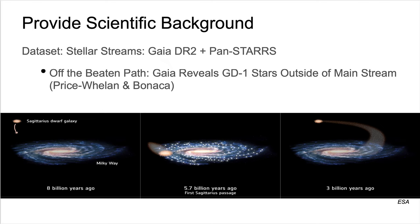In the series of pictures on this slide, you can see the process by which a gravitationally bound structure, such as a globular cluster or a dwarf galaxy, can be stretched into a stream by the gravitational potential of a massive central galaxy like the Milky Way.